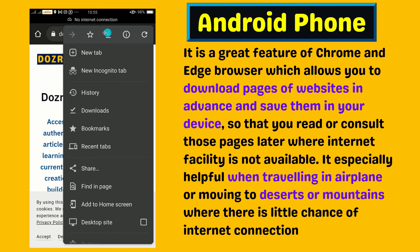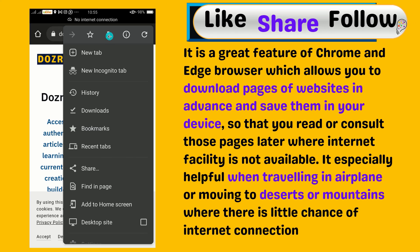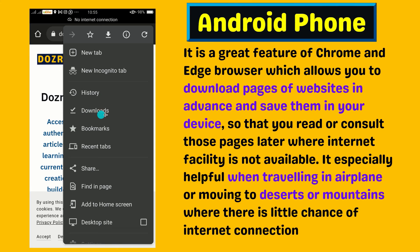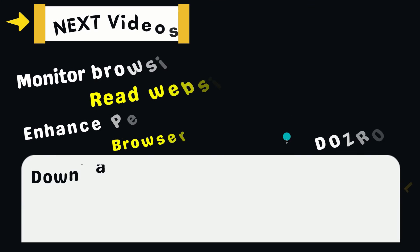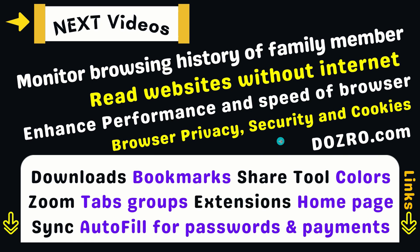On an Android mobile phone, you can save a web page by clicking the three dots on the top right corner of the Chrome screen, then clicking the downward arrow button at the top of the panel. You can access saved web pages in Android by clicking the three dots in Chrome and selecting the 'Downloads' option.